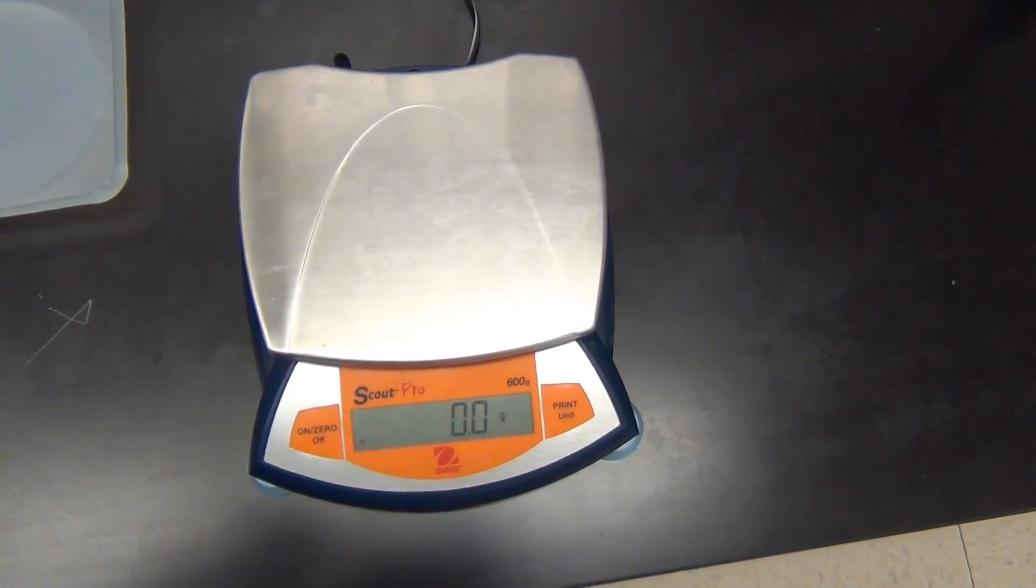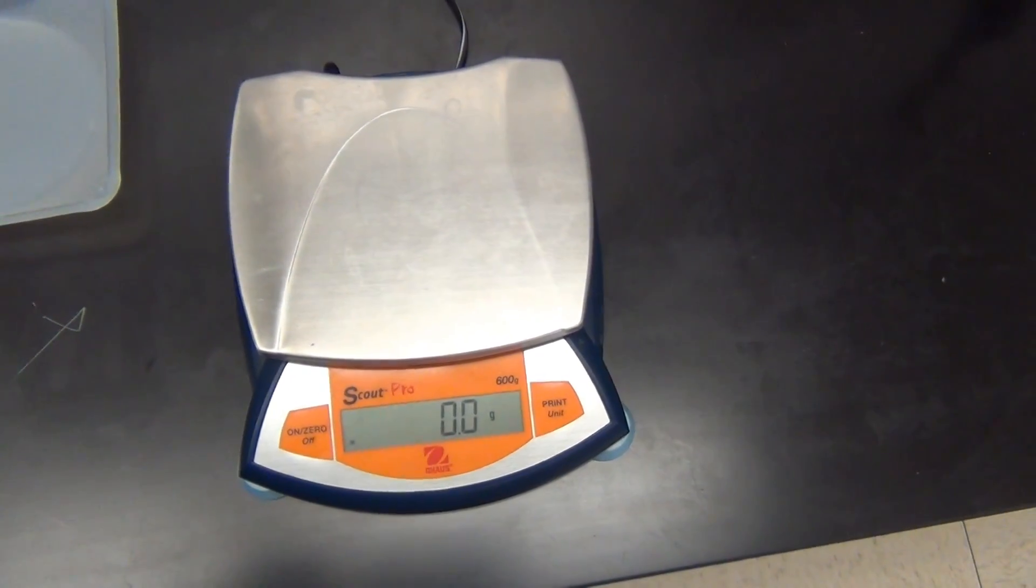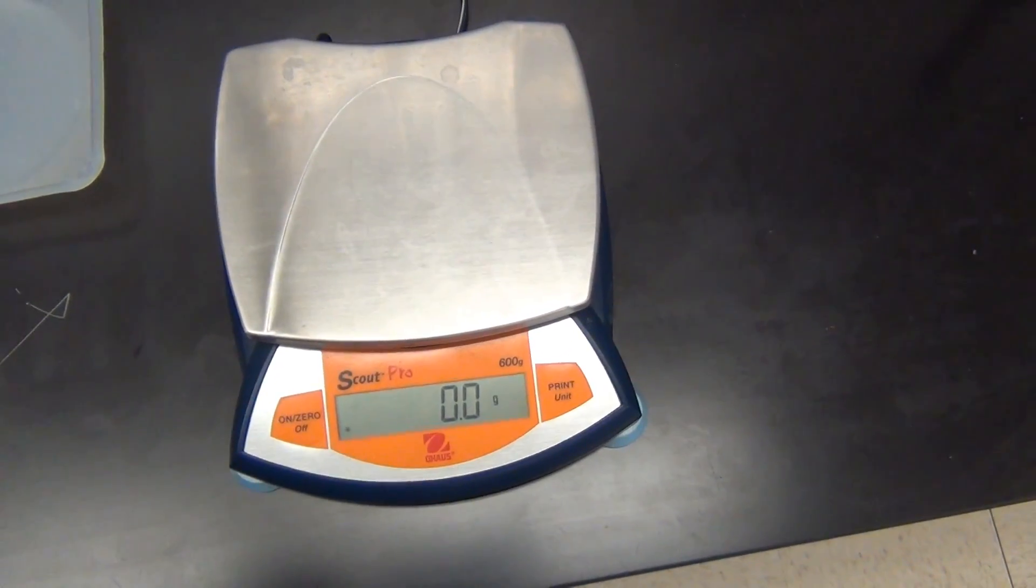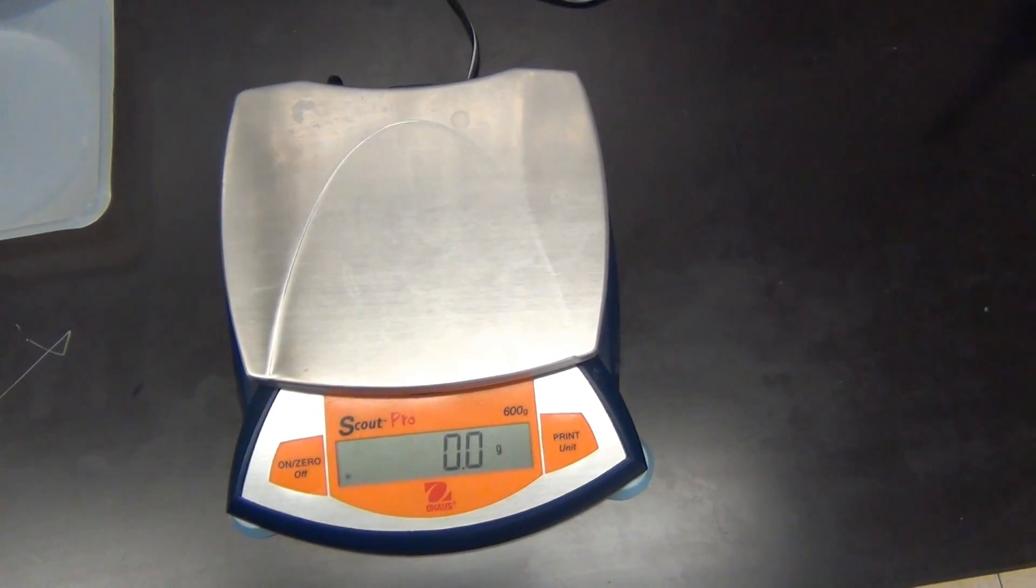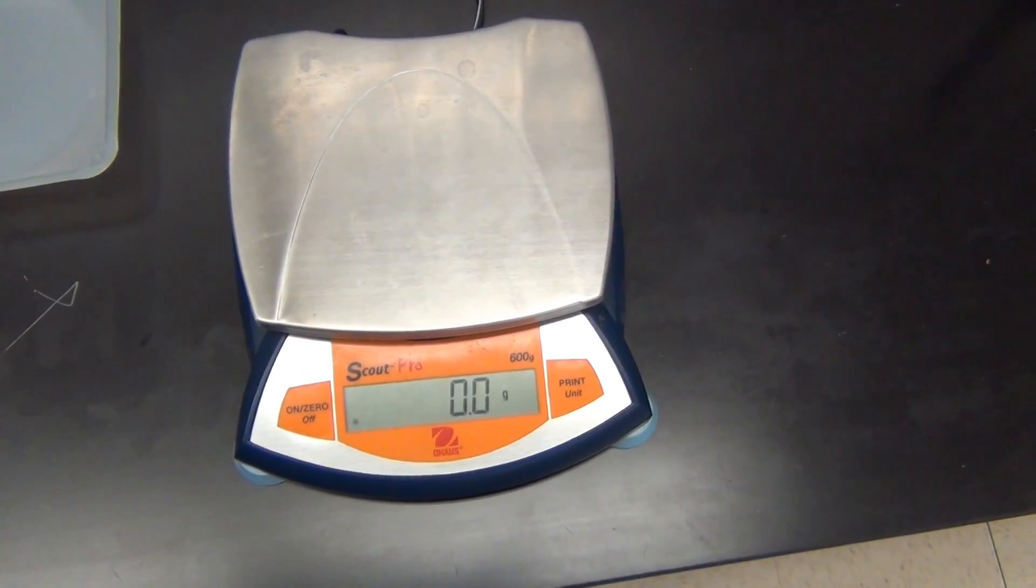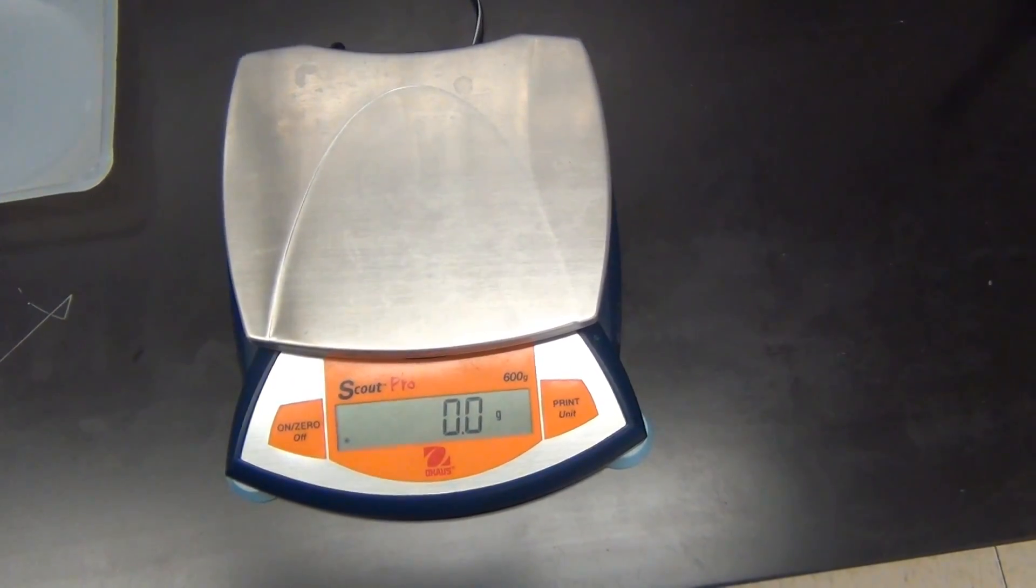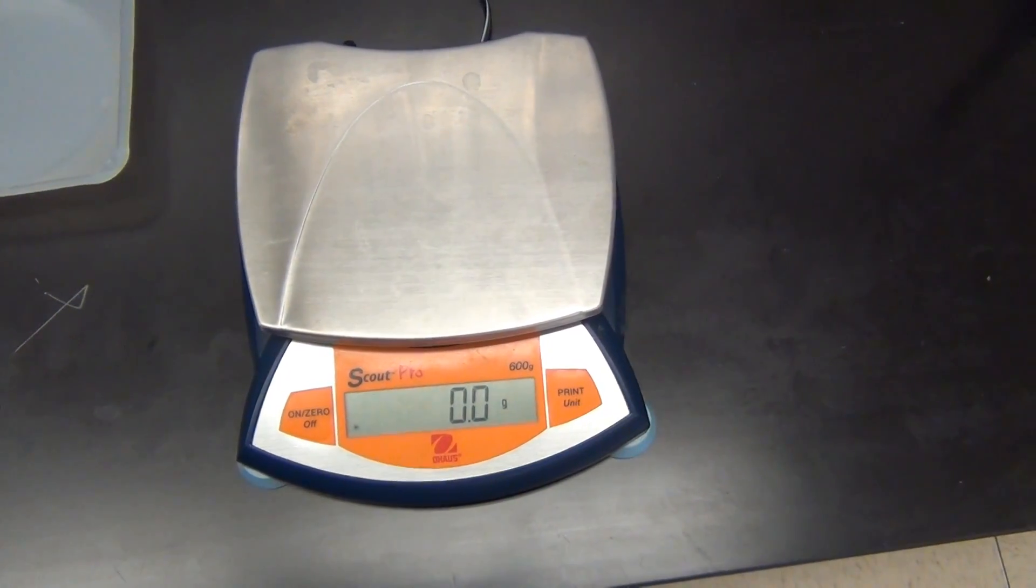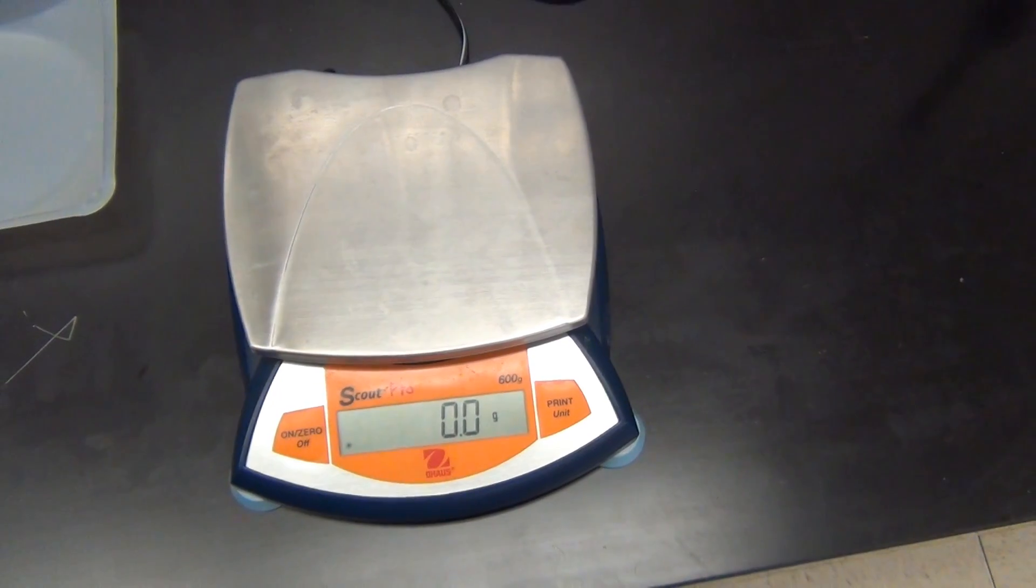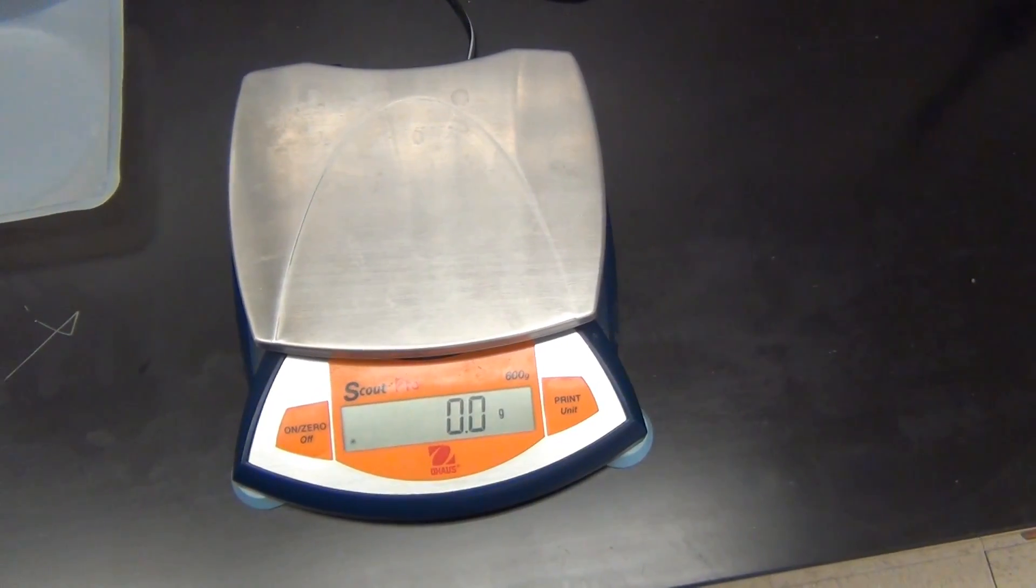First, let's look at the top loading balance. It's a balance that is accurate to the nearest one tenth of a gram. It is used in honors and CP level classes as well as at the AP level. It's a good purpose general balance valued at about 250 dollars.